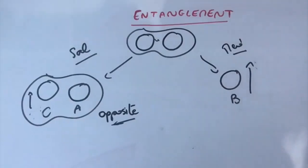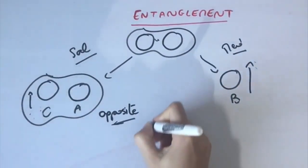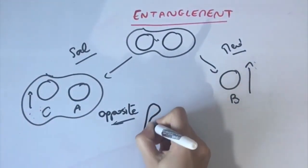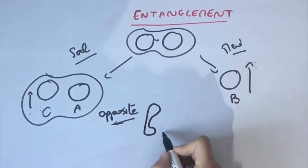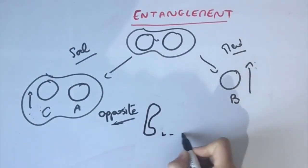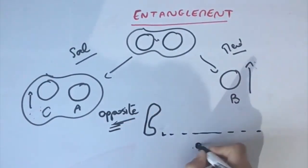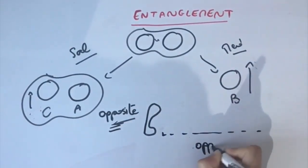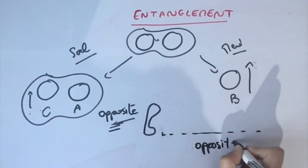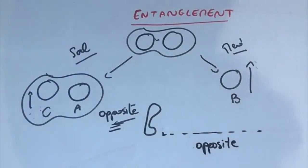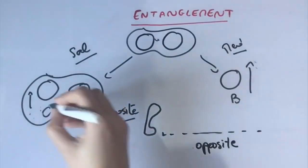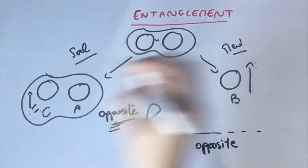Instantaneously? But what about special relativity? Here, nothing is transferred faster than the speed of light. Cell does need a classical communication channel to communicate the outcome of the previous measurement to Med. She will tell him 'opposite,' and he will know that B spins up just like C.